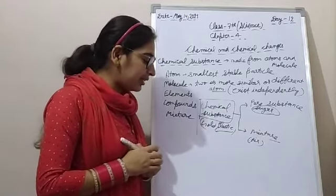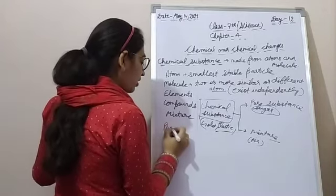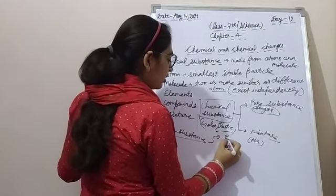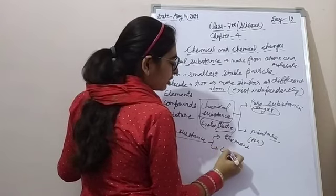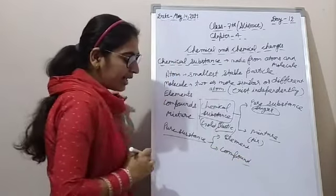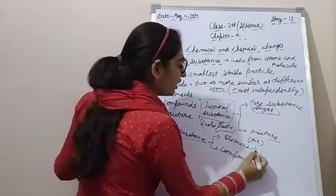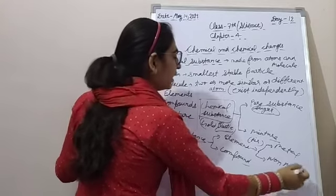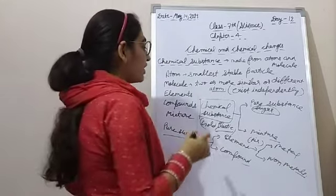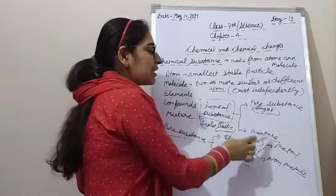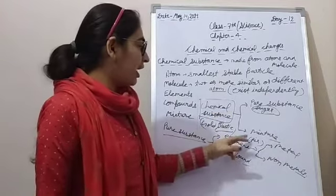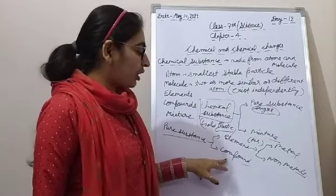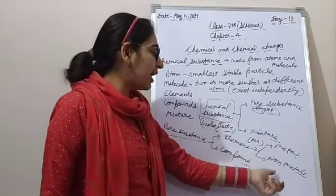Pure substance ke bhi alag-alag types hote hain. Pure substance ke examples hain: elements and compound. Elements ke aage bhi two types hote hain: metal and non-metal. So this is the classification of chemical substance — pure substance and mixture. Pure substance further divides into elements and compound, and elements further divide into metal and non-metal.